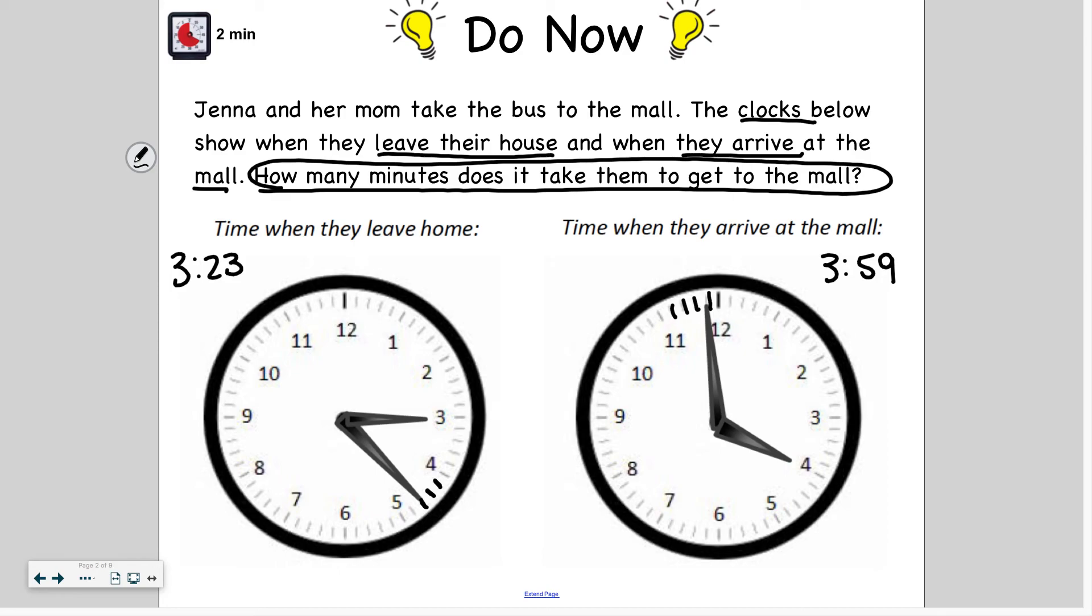So from 3:23 to 3:59, how much time did it take them to get to the mall? So I can use this clock and I want to see how much time has elapsed from here to where the minute hand is showing on this one. So I'll start here. This would be two minutes to get from 3:23 to 3:25. And to get from here, that's five. Another 10 minutes. We're at 15 minutes so far plus the two. We'll count that at the end. Another five would be 20 minutes, 25 minutes, 30 minutes, and then plus one, two, three, four, because it stopped at 59.